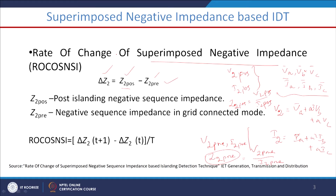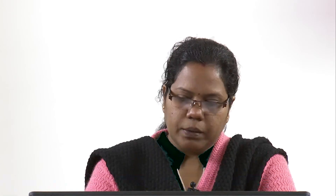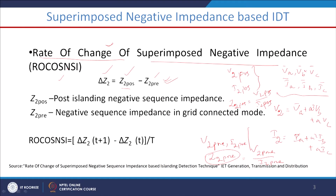If it is superimposed voltage: ΔV = V_post − V_pre. If it is superimposed current: ΔI = I_post − I_pre. In this case, we have taken the superimposed negative sequence based impedance, and we have further taken the rate of change of this superimposed negative sequence impedance — in short form: ROCSNSI.